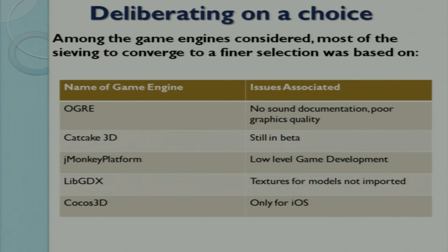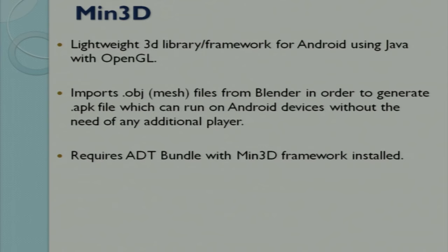Cocos3D can publish apps in Android and iOS, but most of the work done in it has only been for iOS. After this sieving, we narrowed our options to two: Min3d and GameKit. Min3d is a lightweight 3D framework for Android. You can take your Blender .blend model and export it as a .obj and .mtl mesh file. Min3d will then flatten your object into an array of vertices. It requires an ADT bundle with the Min3d framework installed, so you can take the model and its vertices for manipulation and make modifications in the Android application code.